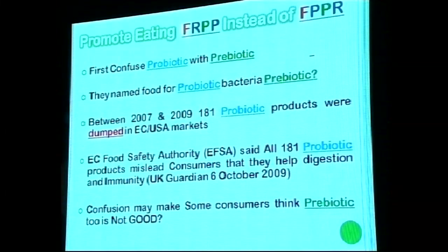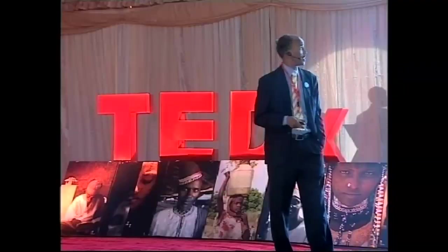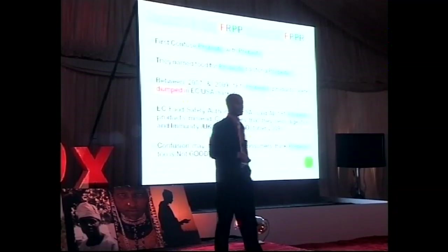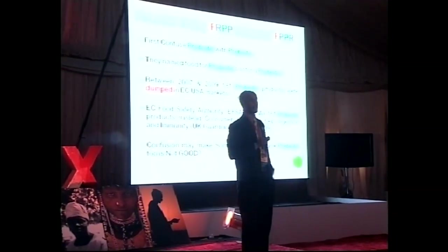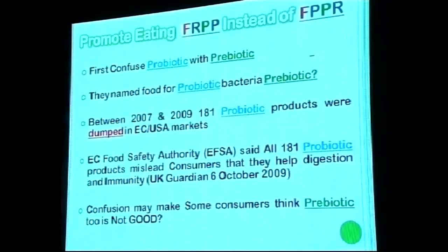Another source of confusion is the terminology itself: calling the bacteria 'probiotic' and the food for the bacteria 'prebiotic' leads to constant confusion. Between 2000 and 2009, around 180 probiotic products were produced in Europe and the USA. The European food safety authority declared all 181 probiotic products were deceiving consumers — as reported in The Guardian and the BBC — yet this led consumers to wrongly conclude that prebiotic products also don't work.